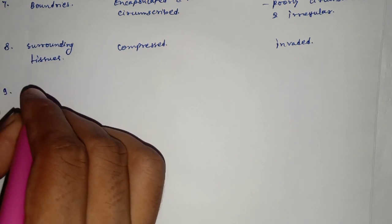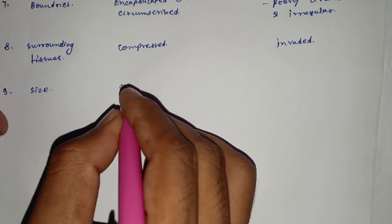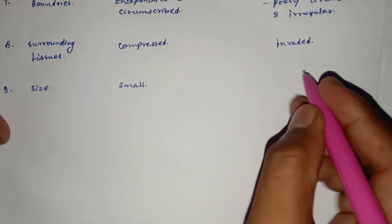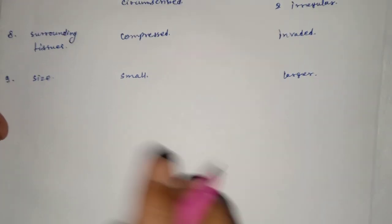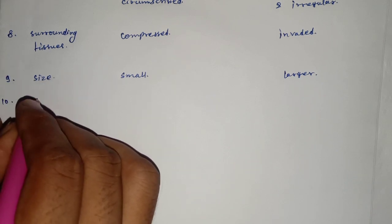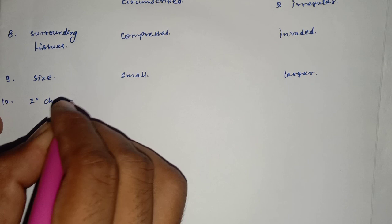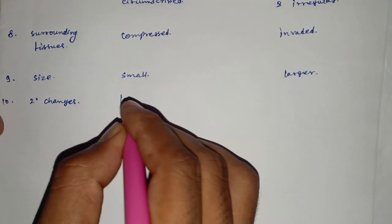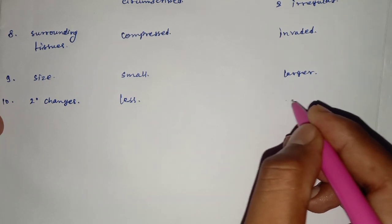The size of the benign tumour is small, and the size of the malignant tumour is larger than the benign tumour. Regarding secondary changes, in the benign tumour these are less, and in the malignant tumour they are high or more.